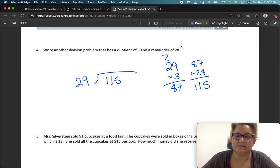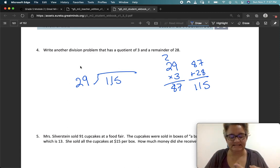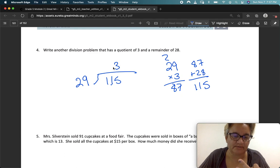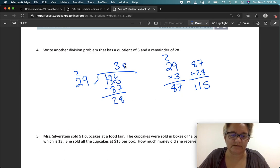So let's estimate 29 to 30. 30, 60, 90, 120. Well, 120 is too big, so let's go back to 3. So 3 here. 3 times 9 is 27. Carry the 2. 3 times 2 is 6 plus 2 is 8. And then we subtract. And this turns it to 10. And that would make this 8, and that 2. Remainder 28.